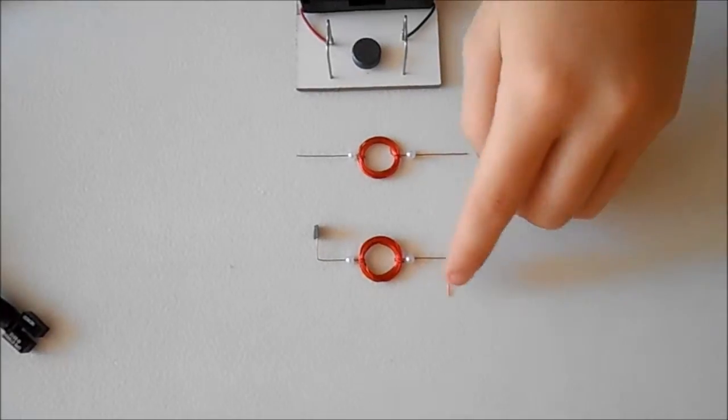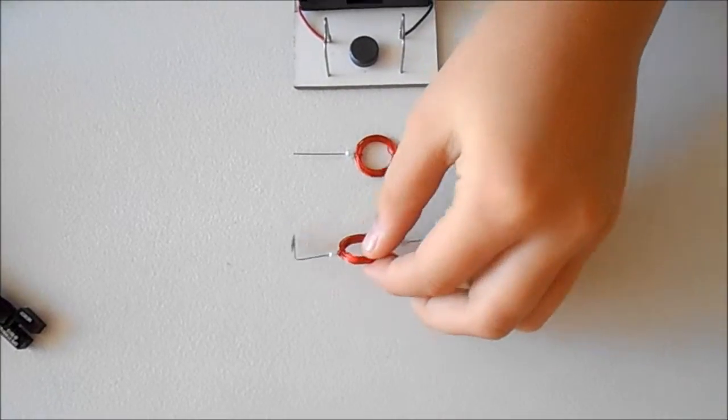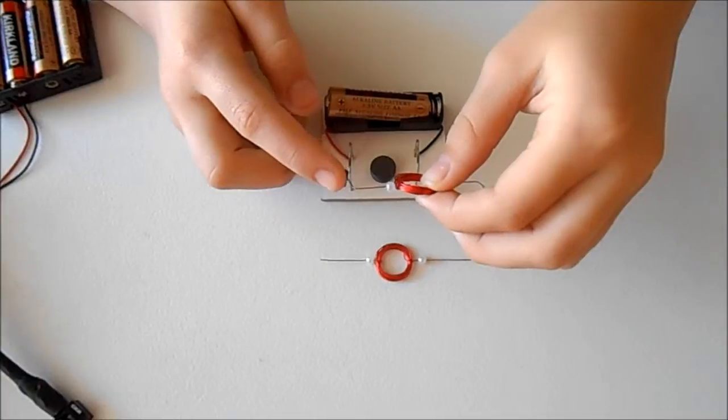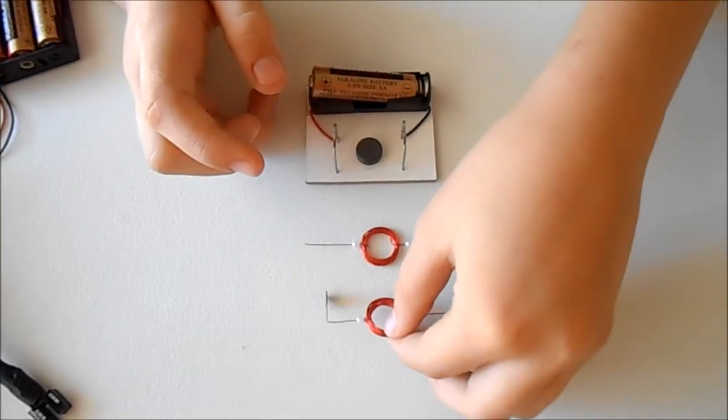Just bend the ends of the coil and attach a small piece of tape or aluminum foil, and you can measure the speed of this motor.